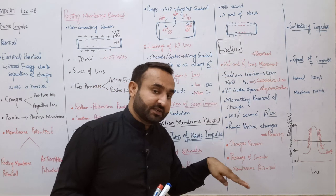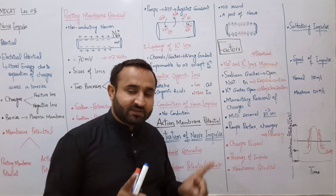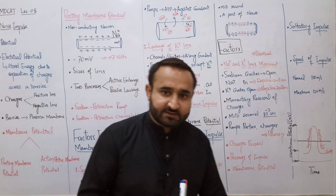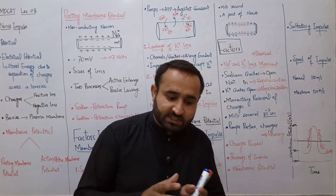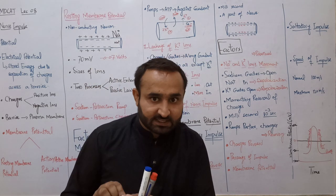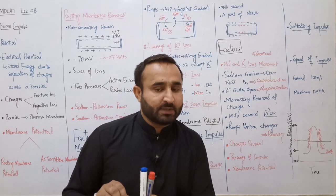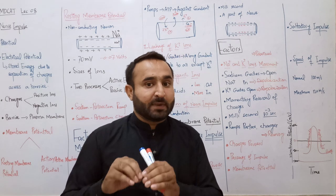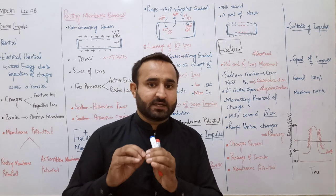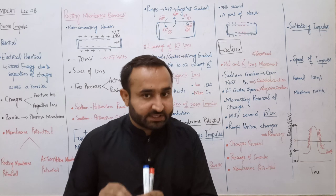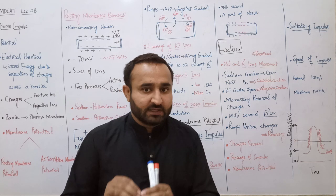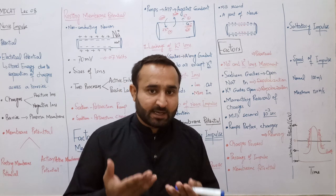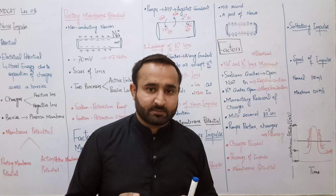اس سے ہمیں یہ بات سمجھ میں آتی ہے کہ resting membrane potential gain کرنے کے لیے energy لگتی ہے۔ Active membrane potential basically passive movement of ions ہے - facilitated diffusion ہے جس کے لیے کوئی energy نہیں لگتی۔